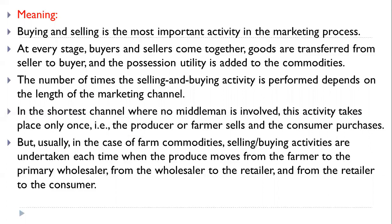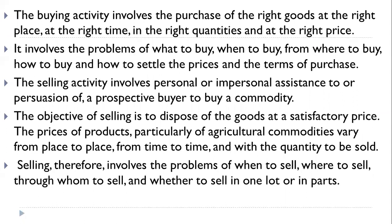Usually, in the case of farm commodities, selling and buying activities are undertaken each time the produce moves — from the farmer to the primary wholesaler, from the wholesaler to the retailer, and from the retailer to the consumer. The buying activity involves the purchase of right goods at the right time, at the right place, in the right quantities, and at the right price.